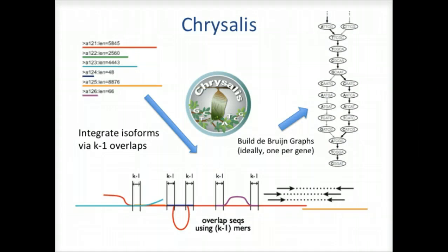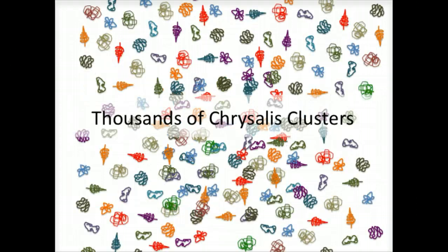Again, the de Bruijn graph represents the overlaps between adjacent k-mers in the sequences with branches at sites of variation. And this is how we end up with many separate graphs, ideally one graph per gene, with each graph representing the transcriptional complexity at that locus. These graphs can then be processed in parallel fashion by the next step of Trinity involving Butterfly.